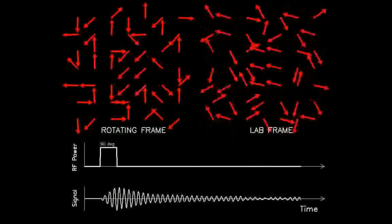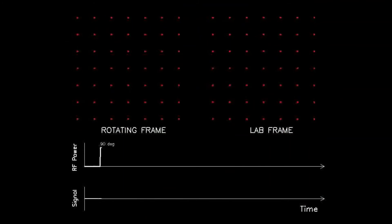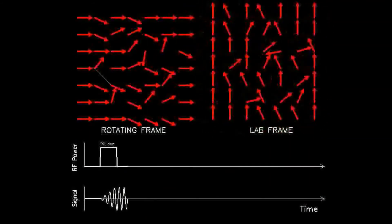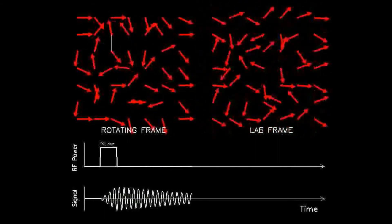Since the dephasing process is gradual, the effect on the signal is an exponential decay superimposed on the sinusoidal waveform. The time for this decay to reach 37% of its maximal value is defined as the T2 time.